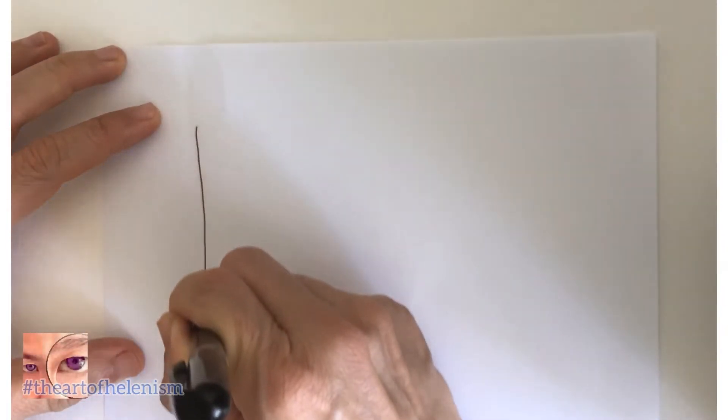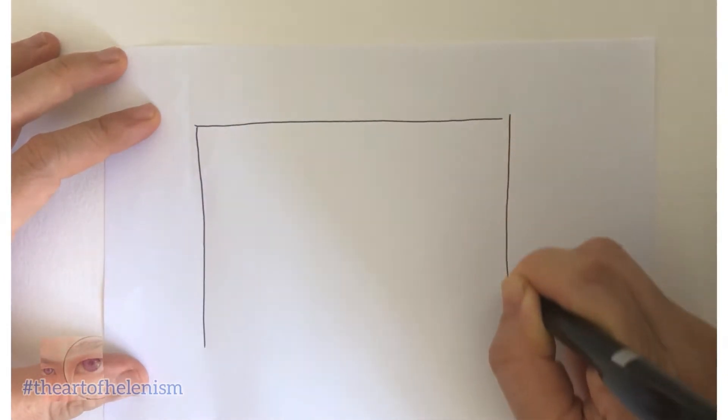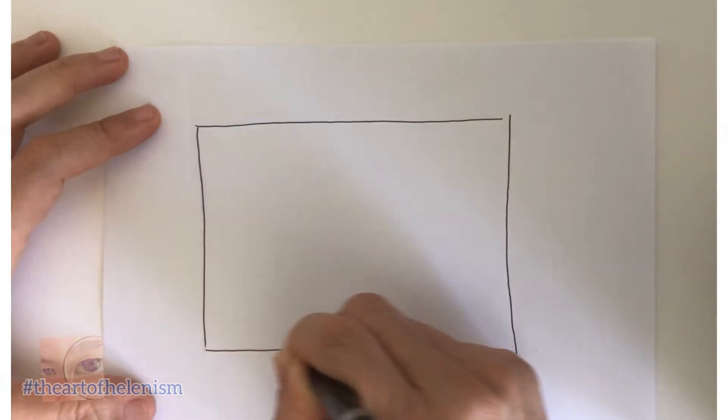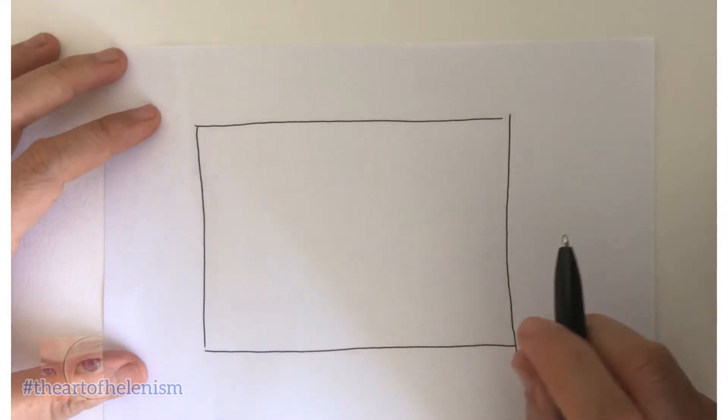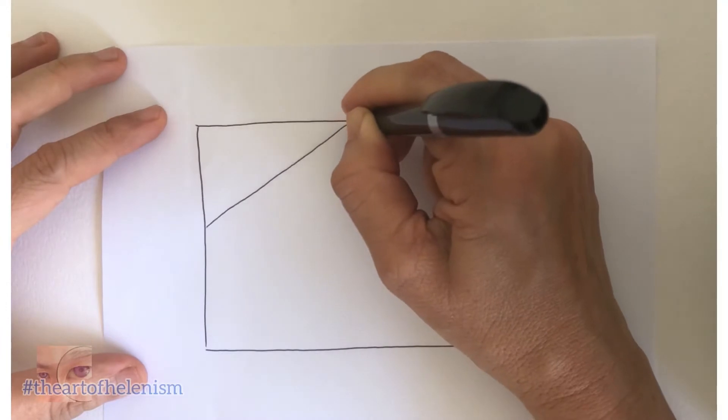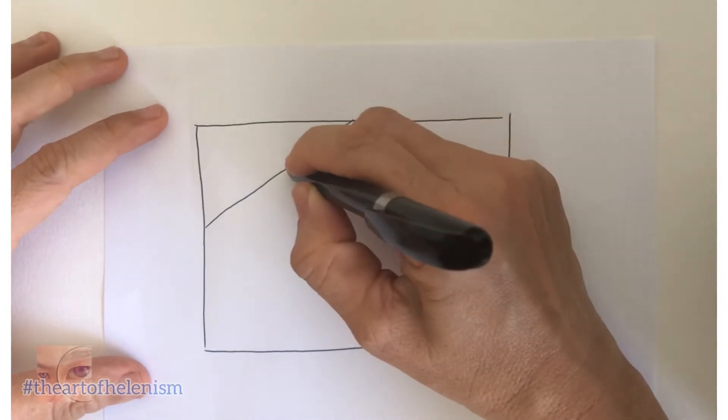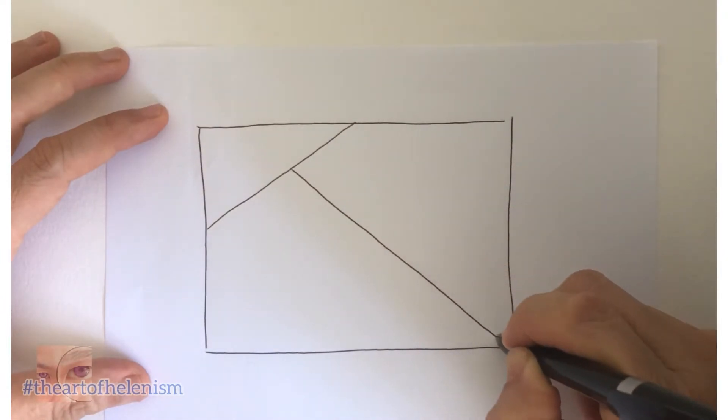Take your pen and draw a big box on your paper. Inside the big box, draw a line from one end to the other and then draw another line.